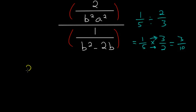So we have 2 over b squared a squared times b squared minus 2b divided by 1.